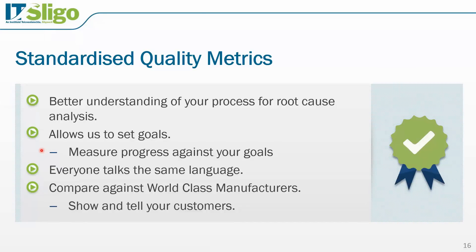If you don't set the baseline and set the goals, it's very difficult to get there. Also, if people are talking in terms of PPM, yield, roll throughput yield, or DPMO, everybody's talking the same language. There is a lot of benchmark data out there for Sigma levels where you can go and see what the Sigma level of your process is and compare it against other facilities in your company, or even compare against world-class manufacturers and world-class hospitals, and show your customers.